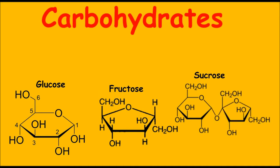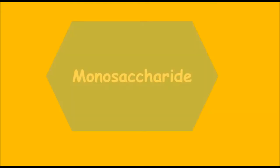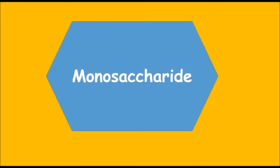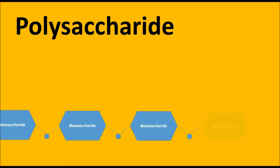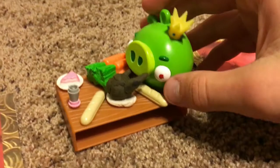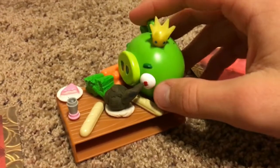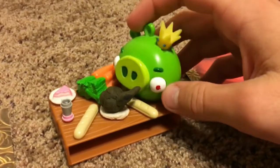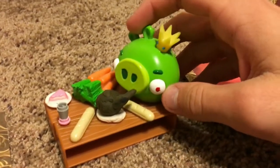Carbohydrates make up sugars like glucose, fructose, and sucrose. These sugars give us quick energy, especially in their monomer form — also known as a monosaccharide. A carbohydrate polymer is called a polysaccharide. Carbohydrates are found in many foods we eat, like bread and starch.